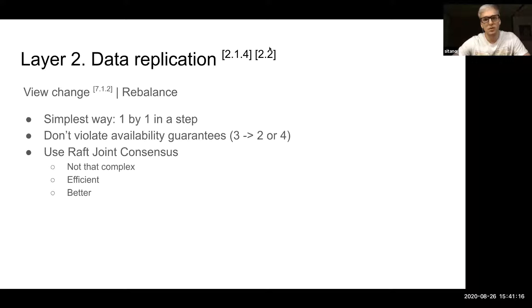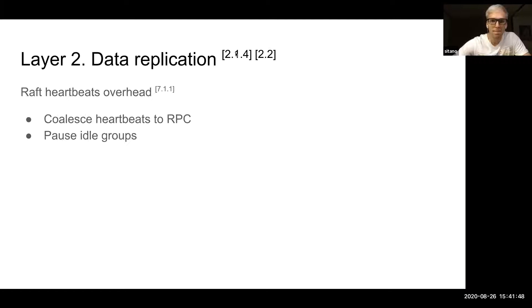They also have some Raft optimizations specifically to them. For example, for the view change they implemented the Raft joint consensus, which they state isn't much harder to implement than the default one-by-one view change from the original paper. That allows them to efficiently rebalance data buckets without violating the availability guarantees.